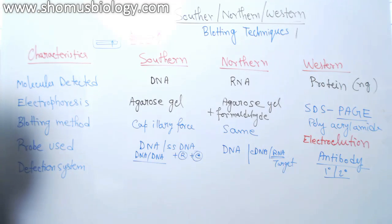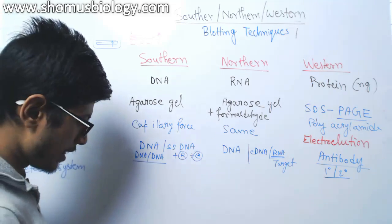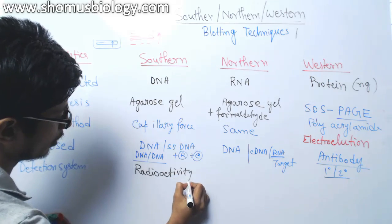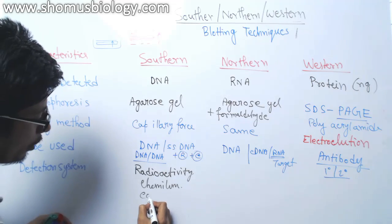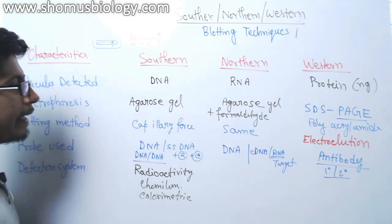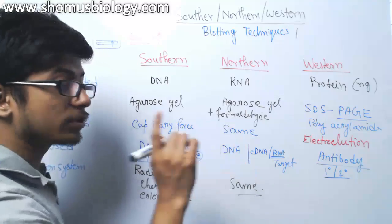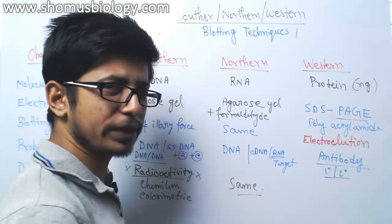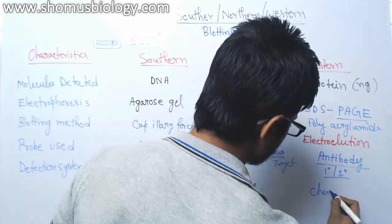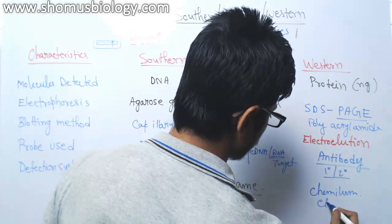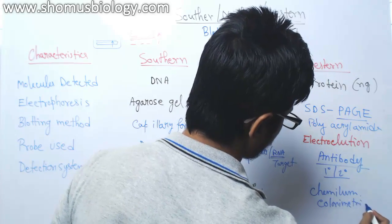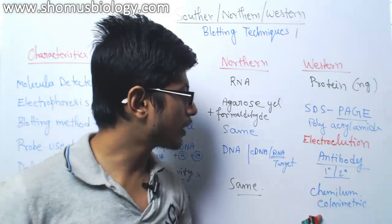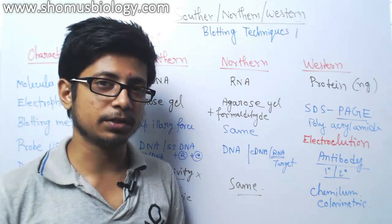The last characteristic is the detection system. For southern blotting and northern blotting the detection systems are the same: we can use radioactivity, chemiluminescence, or colorimetric analysis. In case of western blotting, radioactivity is not used or preferred because there is no convenient way of radio-labeling proteins, so we use either chemiluminescence or colorimetric analysis. Chemiluminescence means the emission of light after the reaction, which proves the presence of the target protein, while colorimetric analysis produces a color change that also confirms the presence of the protein.